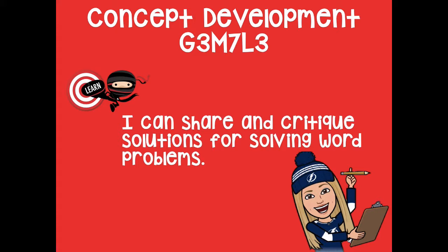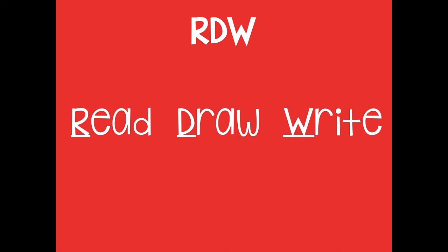We are going to have our learning goal of I can share and critique the solutions for solving word problems. Remember, we're going to use the RDW process. R is read, D is draw, and W is write. So you are going to read the problem very carefully, ask yourself what can I draw as a model for my problem, and then what equations can I write that go along with the problem and what can I write in a complete sentence to explain my answer.